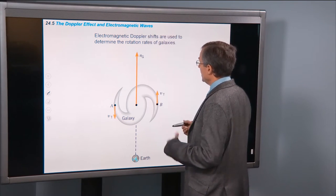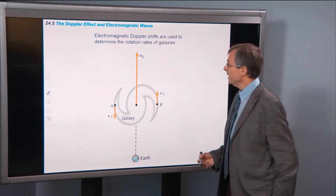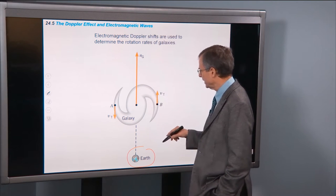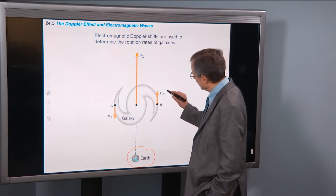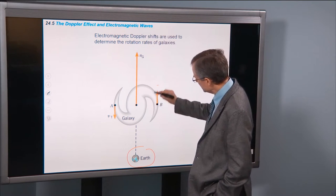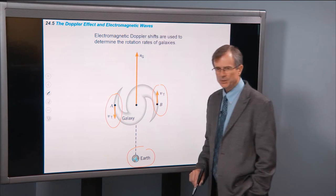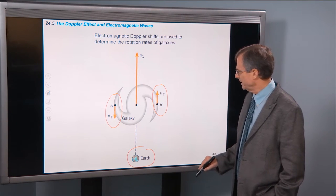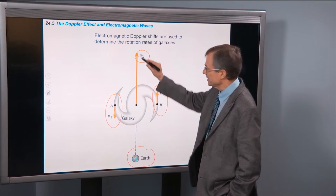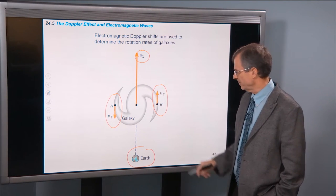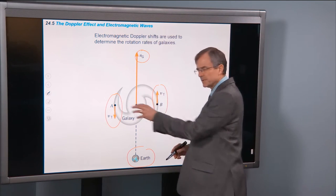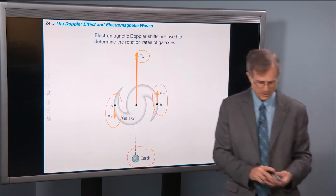Now, these Doppler shifts are used to determine the rotation rates of galaxies. So if we're here on the Earth and we're looking at a rotating galaxy out there, it's rotating away on this side and toward on this side. And you can use that to determine not only how fast this galaxy is moving away from the Earth, but also to figure out, with the differences in looking at one side versus the other, how fast the galaxy is rotating.